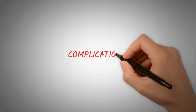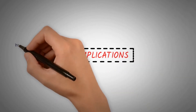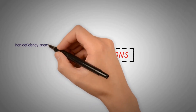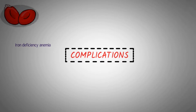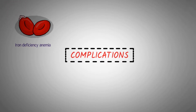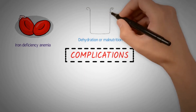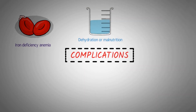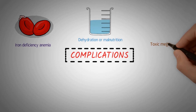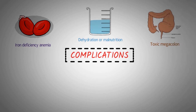IBD can lead to other health problems. Iron deficiency anemia happens when your level of healthy red blood cells, which carry oxygen to all parts of your body, is below normal — this can happen because of blood loss from your digestive system. Dehydration or malnutrition can result from diarrhea and cramping pain making it harder to eat, and you may need an IV or feeding tube to replace lost nutrients. Toxic megacolon happens when the large intestine swells quickly and stops working; it is serious and can cause severe pain and even death.